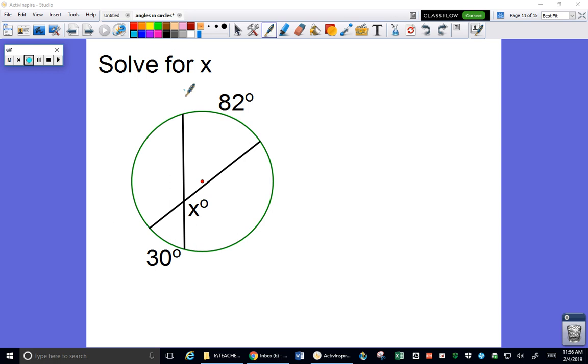So this problem, if we color in the arcs that we know, 82 is up here and 30 is down here. If we use our interior angle, that would help us find either one of these two, because the angle has to line up with your arcs. We can't actually solve for x directly.